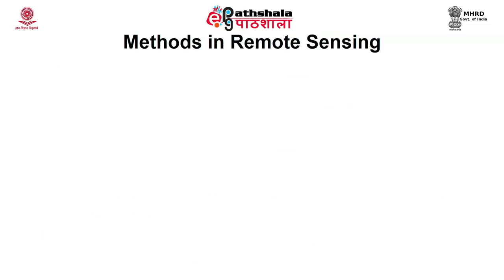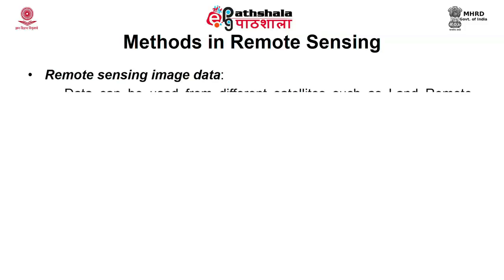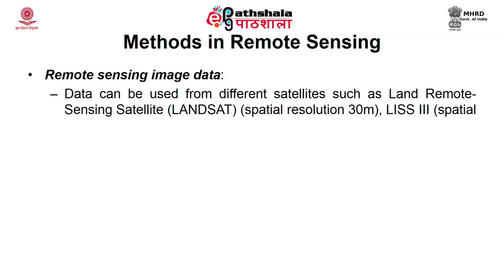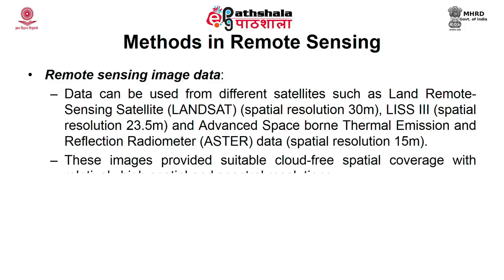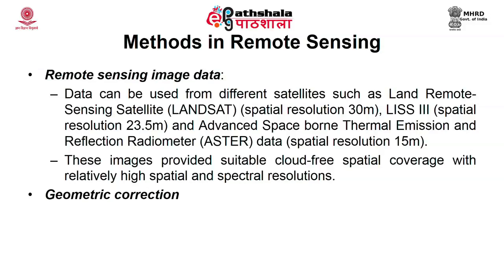Coming to the methods in remote sensing used for assessment of land resources, the first requirement is image data. Remote sensing image data can be used from different satellites such as Landsat with a spatial resolution of 30 meters, Linear Imaging Self-Scanning Sensor LISS-3 with a resolution of 23.5 meters, and Advanced Spaceborne Thermal Emission and Reflection Radiometer (ASTER) with a spatial resolution of 15 meters. These images provide suitable cloud-free spatial coverage with relatively high spatial and spectral resolutions.